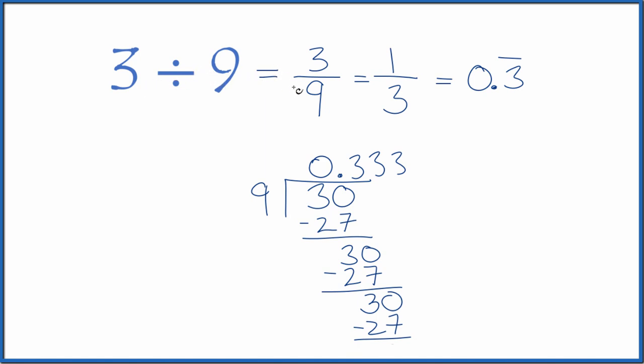So in answer to our question, 3 divided by 9, it equals the fraction 3 ninths or 1 third. And the decimal is 0.3333. And the 3 keeps repeating.